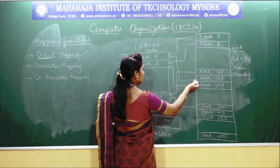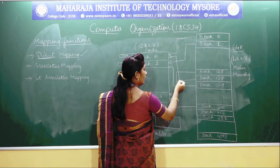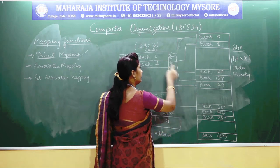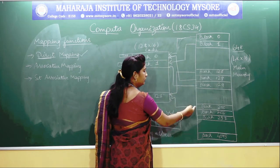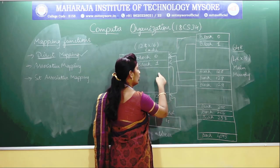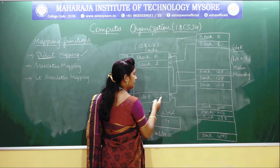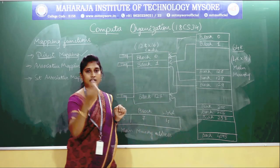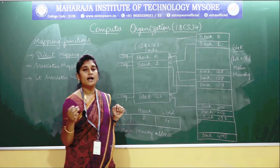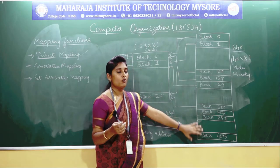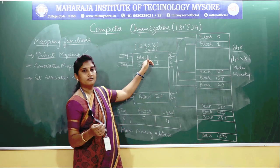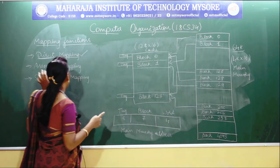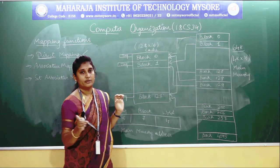What will you do? You will move block 128 again to block 0, block 129 to block 1, block 130 to block 2, likewise block 255 to block 127. In this sequential order, you will be storing all blocks of main memory to the blocks of cache memories. That is why the name is called direct mapping function.